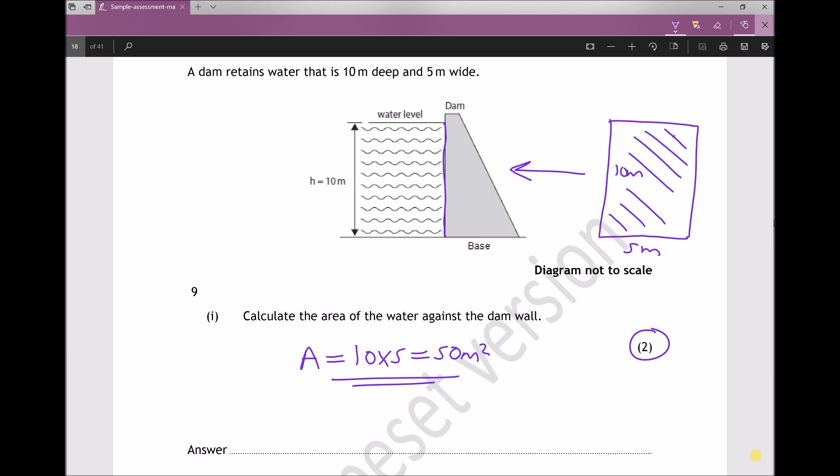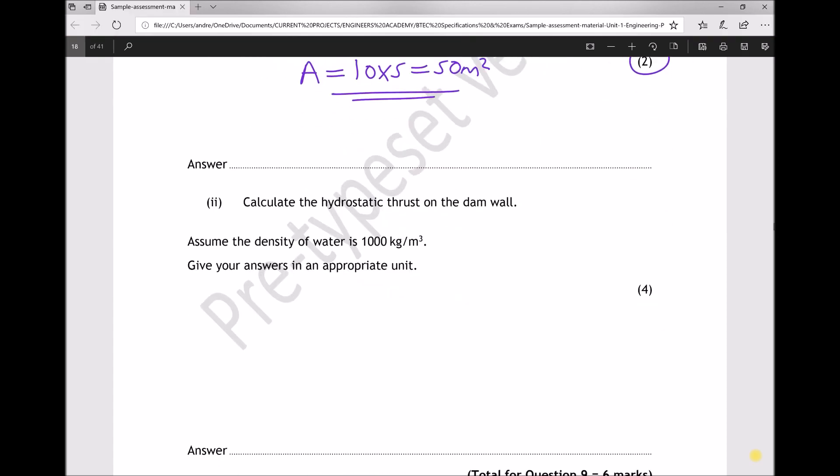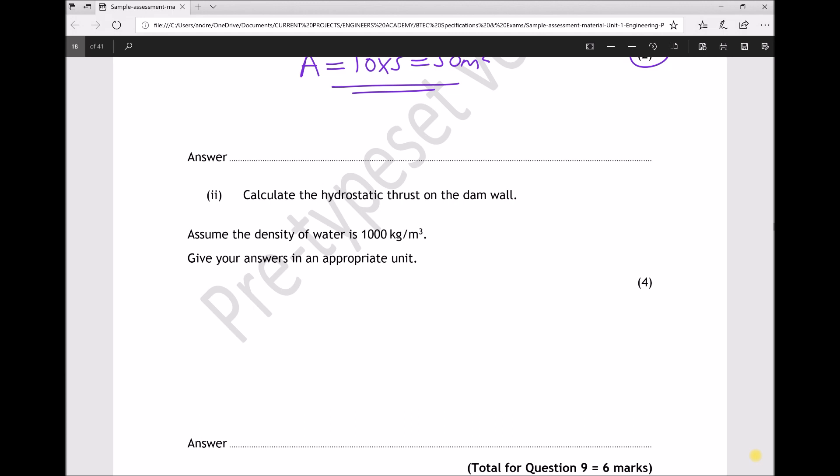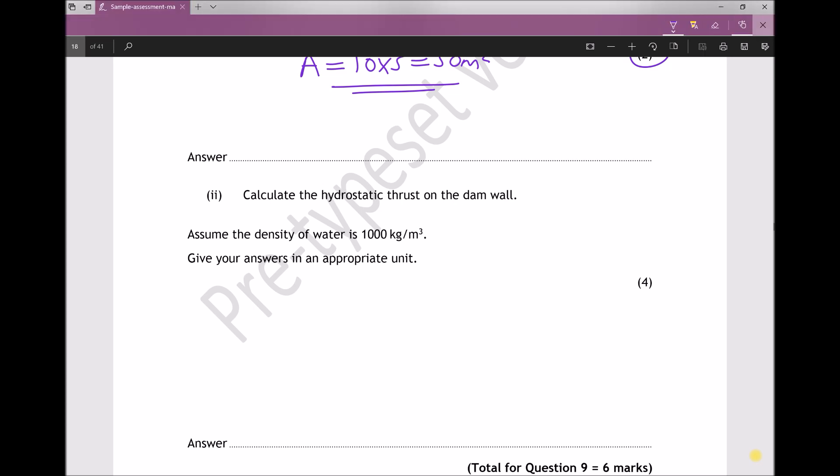If we move on to the next part of the question, next we're asked to calculate the hydrostatic thrust on the dam wall. Now when we refer to hydrostatic thrust, what we're actually referring to is the thrust force, and force is pressure times area. We've already calculated our area, what we need to determine is the required pressure here.